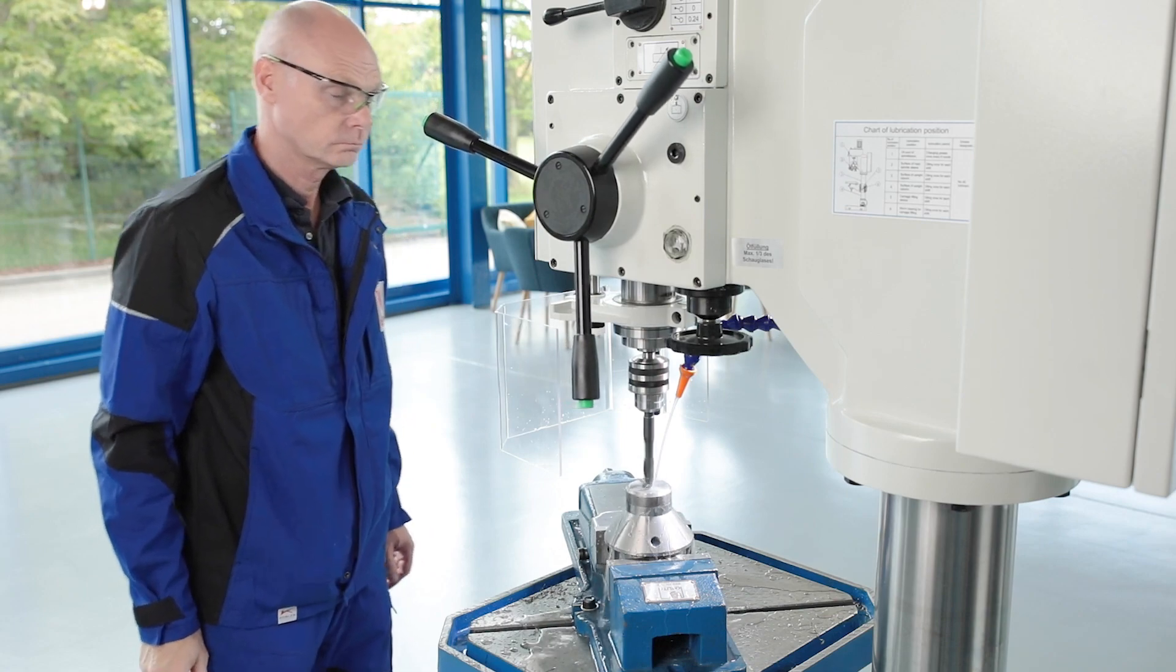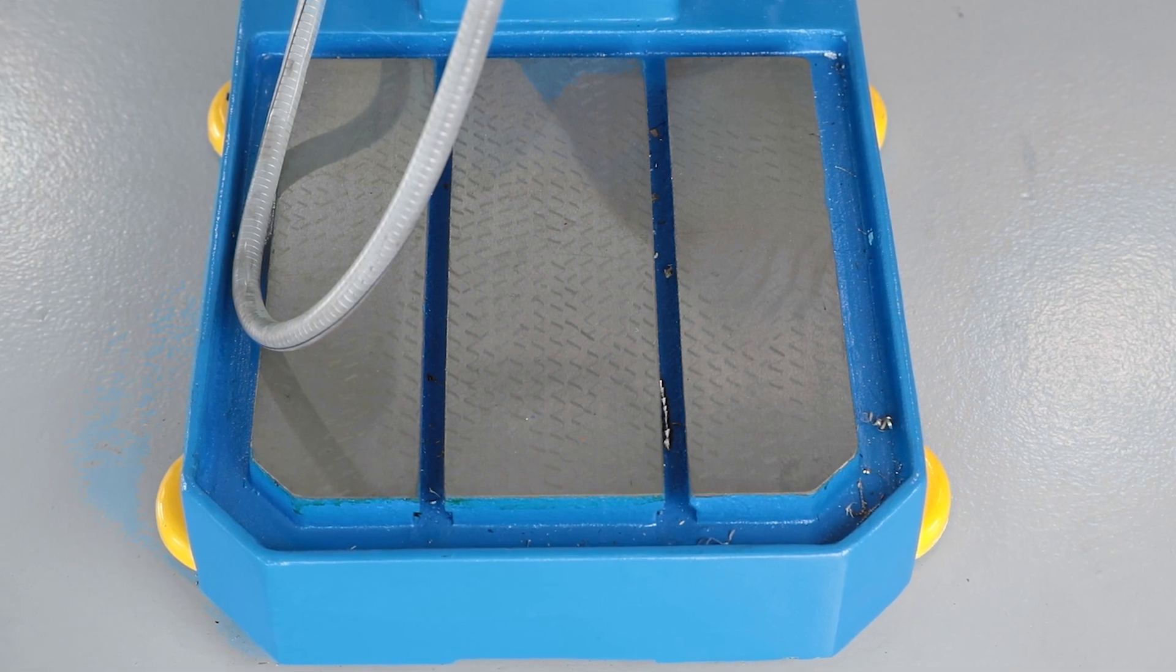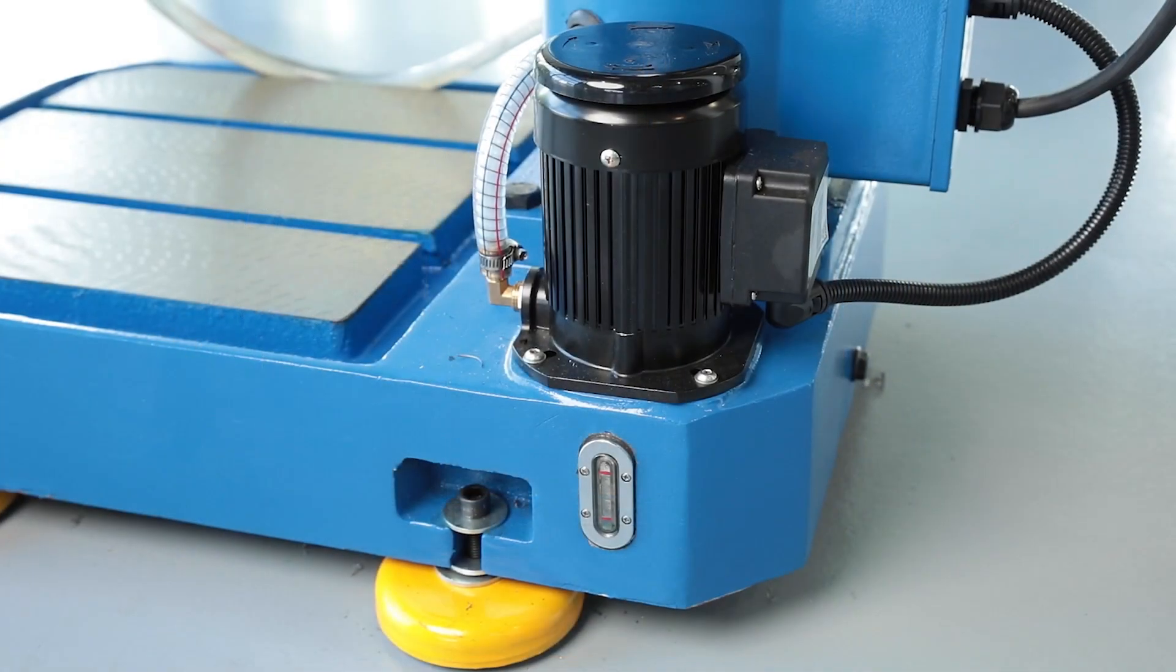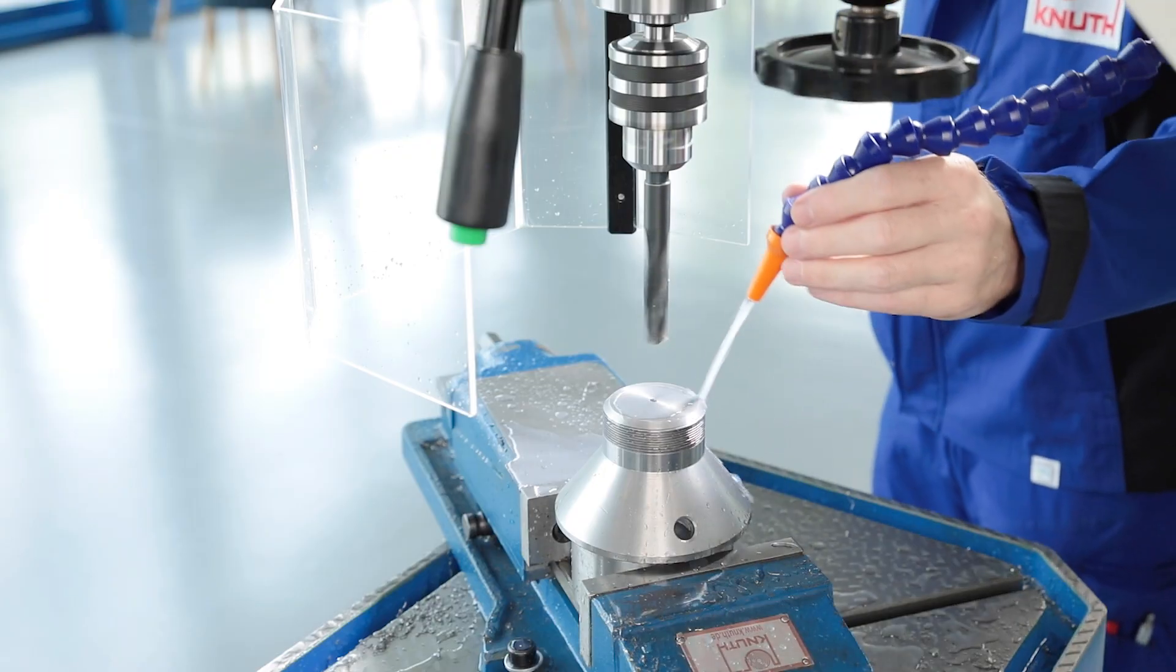The drill base serves as a coolant tank and also offers a large precisely machined clamping surface with parallel clamping grooves. A powerful integrated coolant pump is delivered as standard equipment on SSB drilling machines.